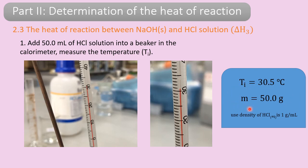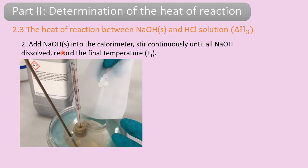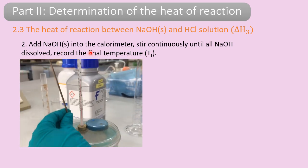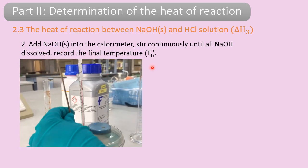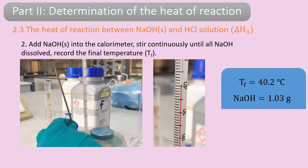The mass will be the mass of 50 ml of hydrochloric acid solution. Approximate the density of the hydrochloric acid solution to be 1 gram per ml, since water is used as the solvent. Then add the solid sodium hydroxide into the calorimeter and stir the mixture continuously until all the sodium hydroxide has reacted. Record the final temperature TF, which is 40.2 degrees Celsius, with the mass of sodium hydroxide being 1.03 grams.